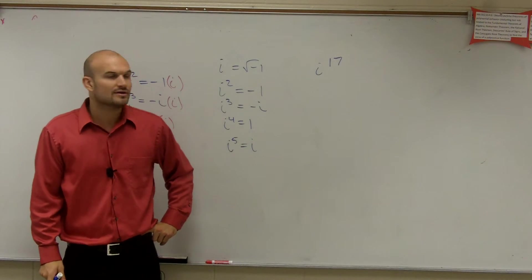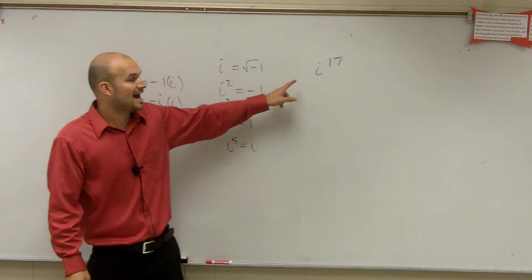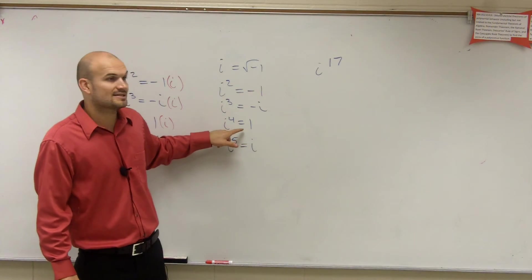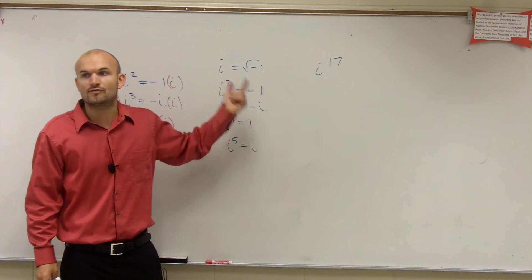However, 16 is the closest number that it's divisible by. So I know that i to the 16th is equal to 1. So what do you think i to the 17th would be? i. Right? It just keeps on repeating over and over.